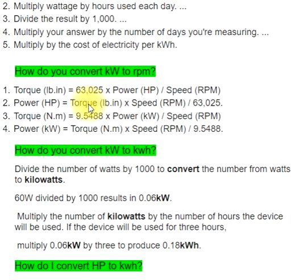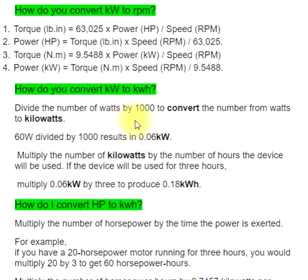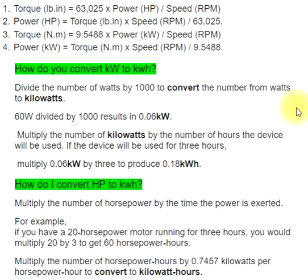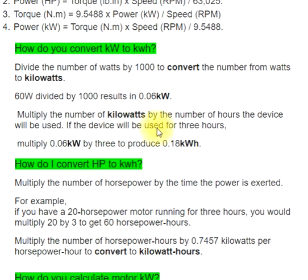How do you convert watts to kilowatts? Divide the number of watts by 1000 to convert from watts to kilowatts. For example, 60W divided by 1000 equals 0.06 kilowatts. Then multiply the number of kilowatts by the number of hours the device will be used. If the device will be used for 3 hours, multiply 0.06 kilowatts by 3 to produce 0.18 kilowatt hours.